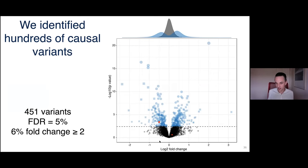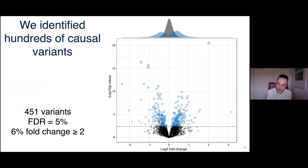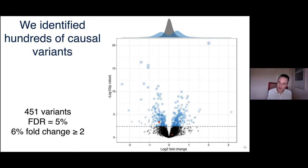We found not just one variant but a couple of hundred. Here they all are — the full fold change that these variants cause in gene expression. We found 451 variants at a good false discovery rate. Most fold changes are not enormous; a twofold effect would be considered large. Most variants have smaller effects, which matches expectations for natural variation in this cross.